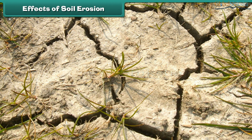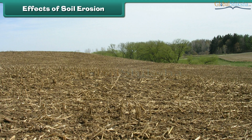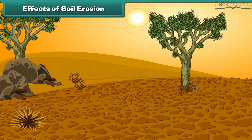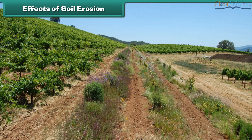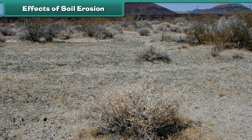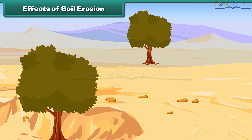Soil erosion leads to many unfavorable conditions. It results in the loss of soil and breakdown of the soil structure. It decreases soil fertility due to a decrease in the amount of organic matter. It also reduces the moisture content of soil, resulting in drought conditions. Decreased soil fertility leads to a decrease in the quality and quantity of crops.